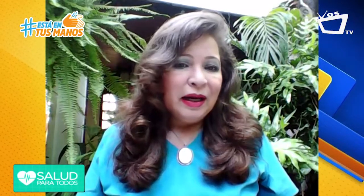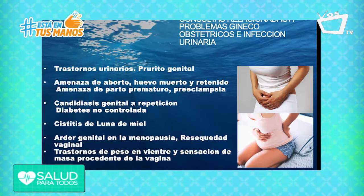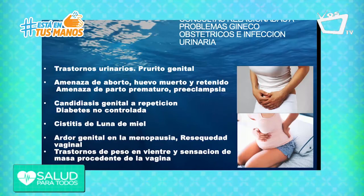¿Cuáles son los principales factores de riesgo en el cuerpo de la mujer? El embarazo es un factor de riesgo. La actividad sexual también — se habla de la cistitis de la recién casada, molestias con ardor después de mucha actividad sexual. La paciente diabética descompensada tiene alteraciones en la flora genital y presencia de hongos que le dan ardor genital e infecciones de vías urinarias. Una paciente con infecciones a repetición o candidiasis a repetición requiere buscar una diabetes de fondo y hacer un estudio completo para ver si no tiene malformaciones en las vías urinarias.